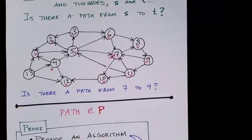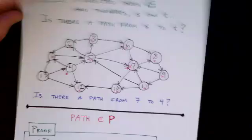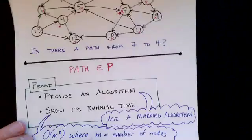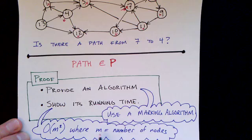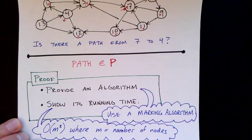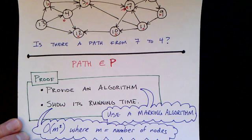And if we analyze the running time of this algorithm that I've just sketched out, it turns out that it's order m squared, where m is the number of nodes. So this is in fact a polynomial algorithm. And therefore this problem is in class P.